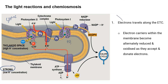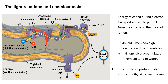Electrons travel along the electron transport chain — electrons excited from both Photosystem II and Photosystem I in non-cyclic electron transport. Cyclic electron transport also occurs at the thylakoid membrane. The electron carriers alternately become reduced and oxidized as they accept and donate electrons. The transfer of electrons along the ETC is shown by the yellow arrow. Energy is released as electrons move along the chain.